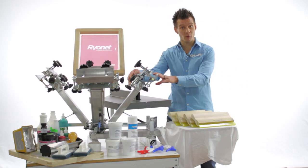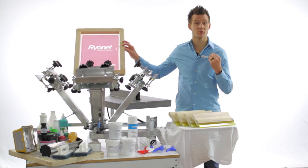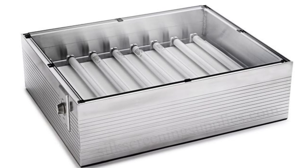This kit also is available with micro-registration, and you can expose your screens with an actual exposure unit versus the 500-watt halogen light that comes with the kit.